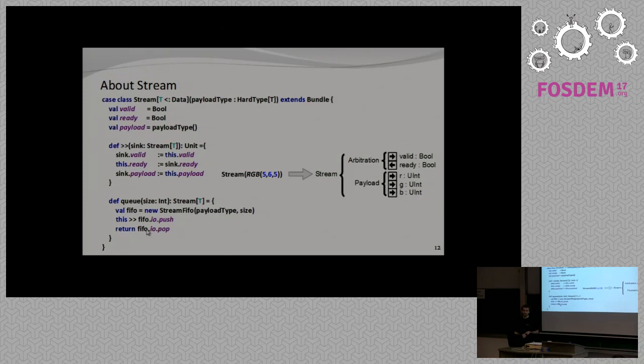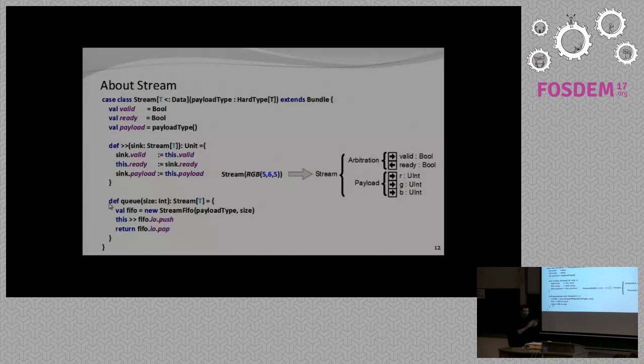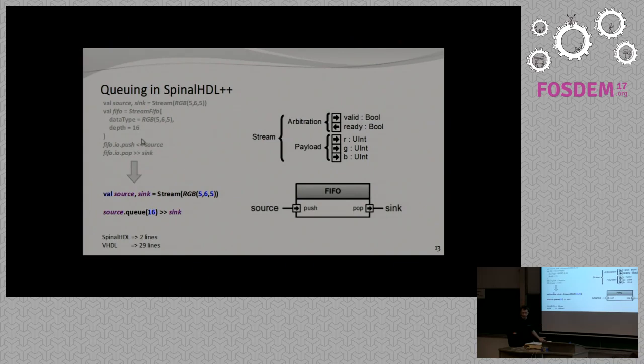In Verilog, functions, tasks and procedures are not that useful because inside them you can't define what you want — you can't define registers or instantiate components. But in SpinalHDL you can really do what you want. You can define a queue function which takes as parameter how big you want the queue to be, and this function will create a new FIFO component internally, connect the stream to its push port, and return the output port of this FIFO. So instead of writing all that binding code, you're just writing: take the source, queue it with a FIFO of 16 elements, and connect it to the sink. You are starting to go away from the mess of wires of hardware design — just saying what you want.